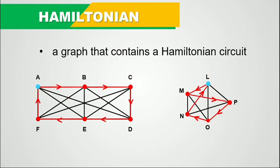A graph that contains a Hamiltonian circuit is called Hamiltonian. As you can see, these graphs can be called Hamiltonian because both of them contain a Hamiltonian circuit. In the first graph, we started from vertex A, then to B, to C, to D, to E, and then to F, and went back to vertex A — this is a Hamiltonian circuit. The second graph is also Hamiltonian because it contains a Hamiltonian circuit.